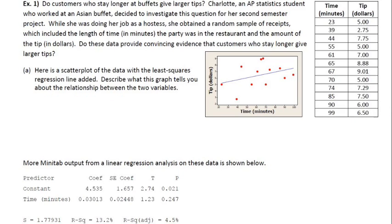So the first example here says, do customers who stay longer at buffets give larger tips? Charlotte, an AP statistics student who worked at an Asian buffet, decided to investigate this question for her second semester project. While she was doing her job as a hostess, she obtained a random sample of receipts, which included the length of time, in minutes, the party was in the restaurant, and the amount of the tip, which is in dollars. Do these data provide convincing evidence that customers who stay longer give larger tips? So part A says, here is a scatterplot of the data with the least squares regression line added. Describe what this graph tells you about the relationship between the two variables. And we've also got the actual data over here as well.